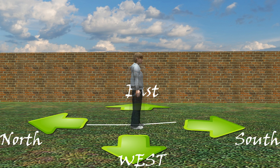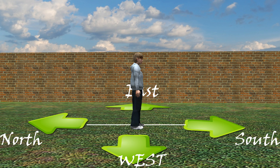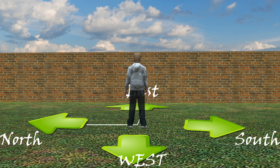Similarly, taking another right angle turn clockwise, you will now face south. If you turn by a right angle in the anti-clockwise direction, which direction will you face? Yes, of course, it is east again.